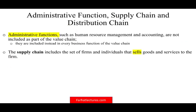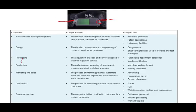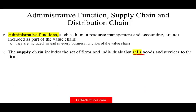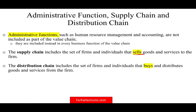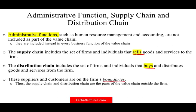The supply chain includes the set of firms and individuals that sell goods to the firm. We need reliable suppliers who can deliver quality products that go into our finished goods. The distribution chain includes the set of firms and individuals that buy and distribute the goods and services from us. These suppliers and customers are called the firm boundaries — therefore, the supply chain and distribution chain are part of the value chain but outside the firm itself.